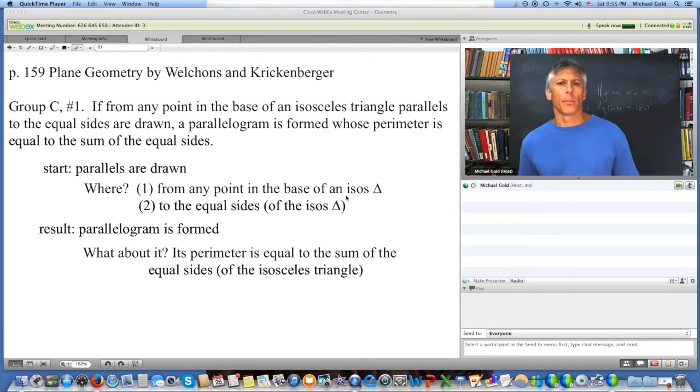so what you need to do is break this down using your grammar. We'll get rid of the prepositional phrases in the first part, and just find the bare bone sentence, which is, parallels are drawn. I have that written there as start. That's our starting point, and the result we want to get from that is that a parallelogram is formed. So we start with an isosceles triangle and draw some parallels, and then we get a parallelogram.